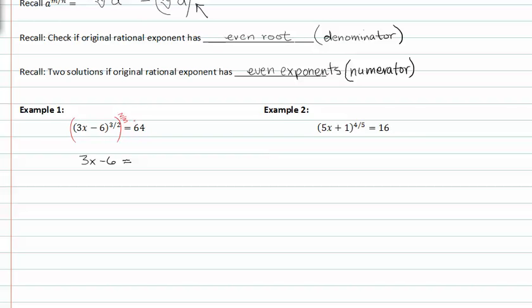But whatever we do to one side, we do to the other. So we have 64^(2/3), the third root raised to the second power. Now we can simplify. The cubed root of 64 is 4, raised to the second power gives us 16.